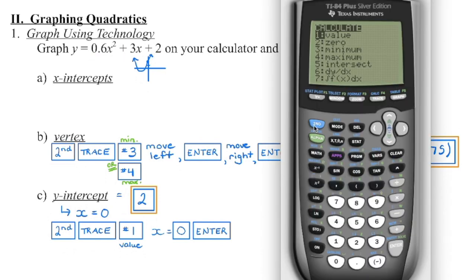It's always second function trace that brings you to the menu allowing us to get specific points. We've done number 1, number 3, and number 4. Number 5, you might remember from grade 10 — that's for when we have two graphs and we're looking for the point of intersection. We are not going to be using 6 or 7. That brings us to number 2, the last one: zeros.